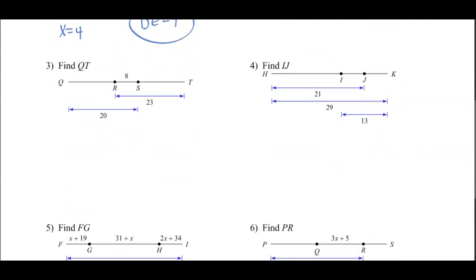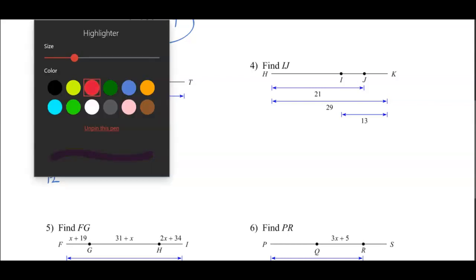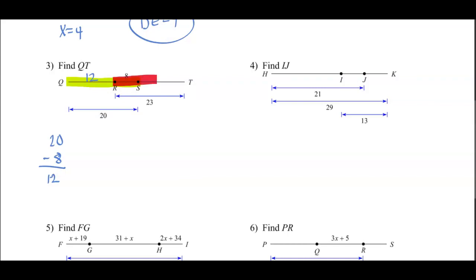In number 3, we're trying to find QT, which is the entire length of the whole segment. What we know is QS is 20 and RS is 8. So 20 minus 8 will give us 12, so QR is 12. Now we have to work on the other end. Working this way, we know that RT is 23.